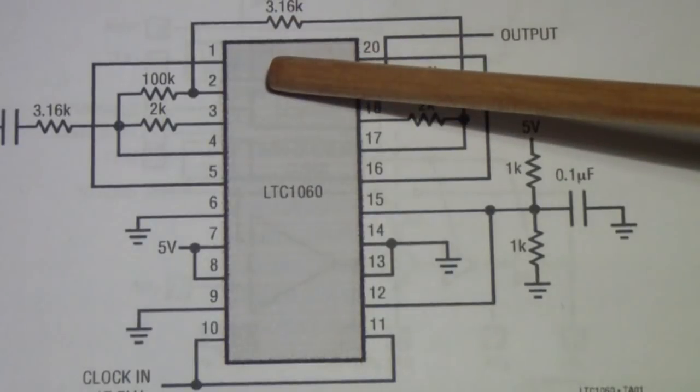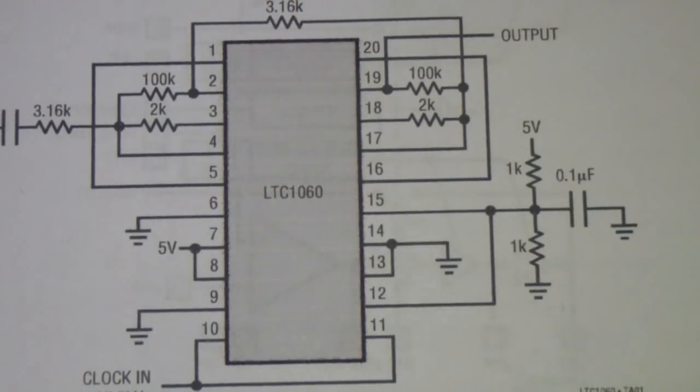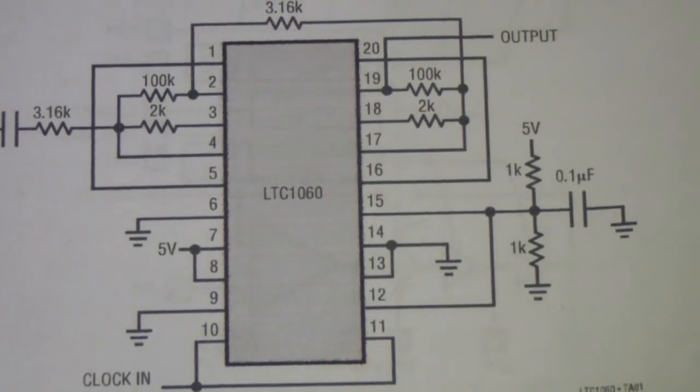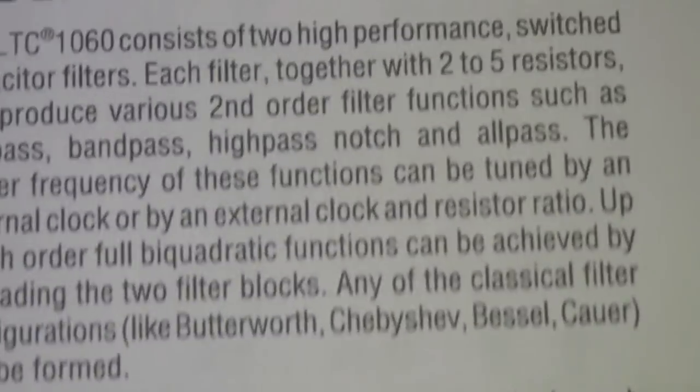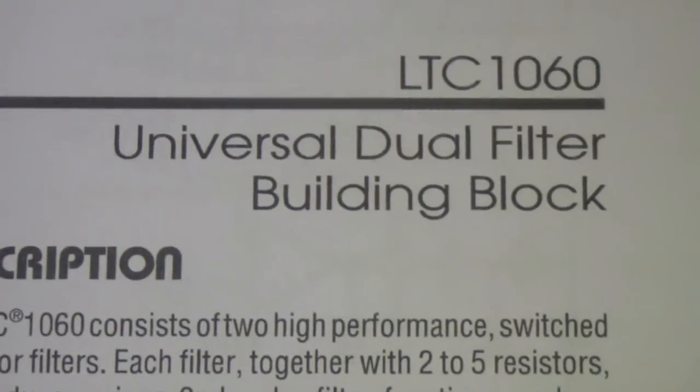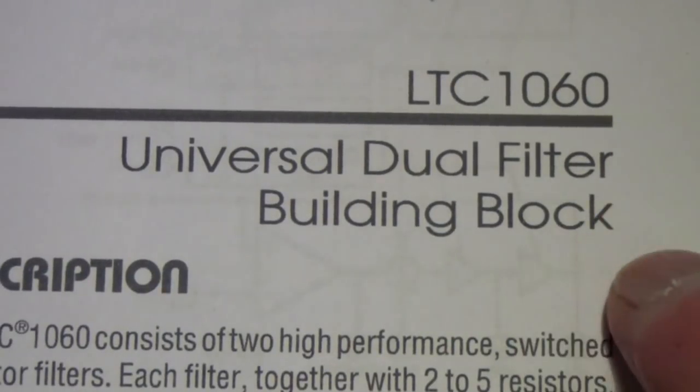And similarly this resistor is also a 3.3k so that will raise the filter frequency slightly. But fundamentally it's a switched capacitor filter, it's called a differential dual filter building block and it's made by linear technologies, the LTC 1060.